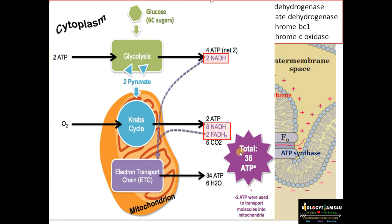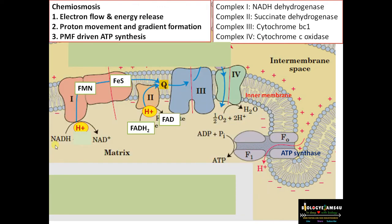After the Krebs cycle, what we have is NADH and FADH2. As we know, approximately 36 ATP molecules are synthesized per glucose molecule; only about 4 ATP molecules are synthesized directly after the Krebs cycle. So the majority — approximately 32 ATP molecules — are synthesized during the electron transport chain and chemiosmosis from electrons donated by NADH and FADH2.